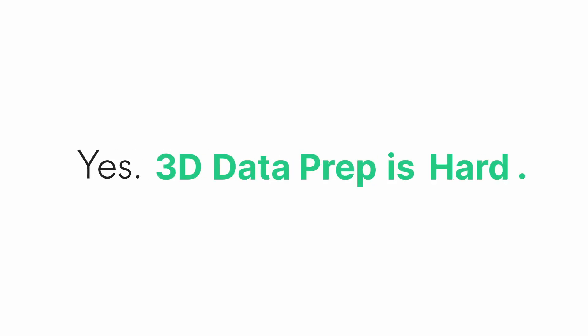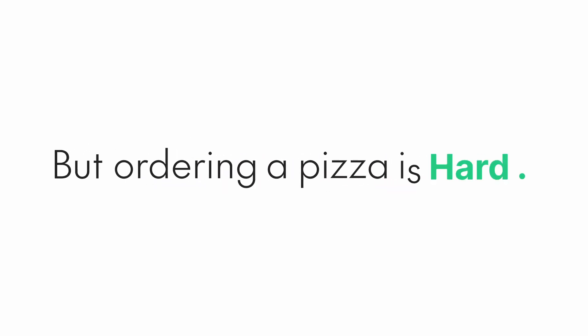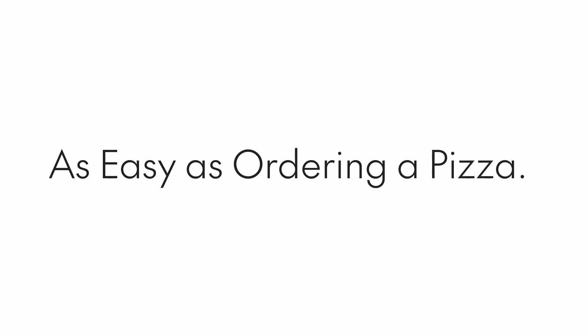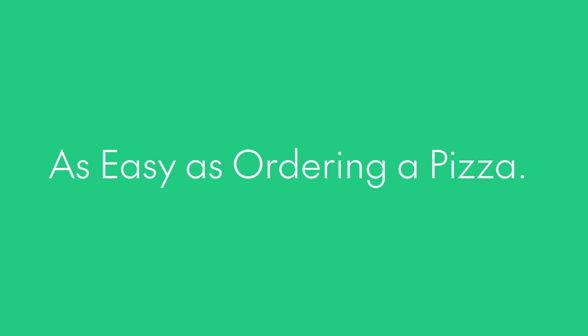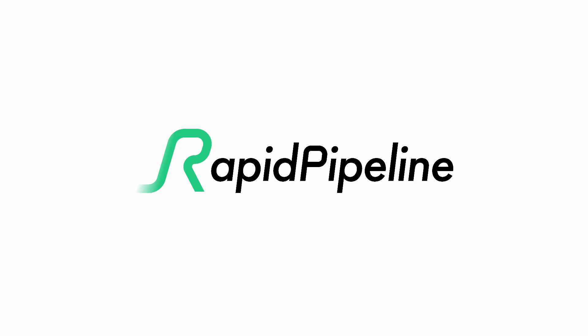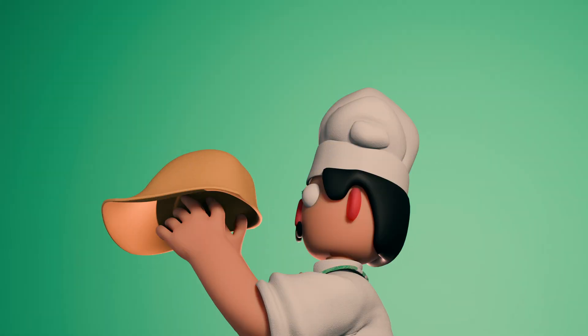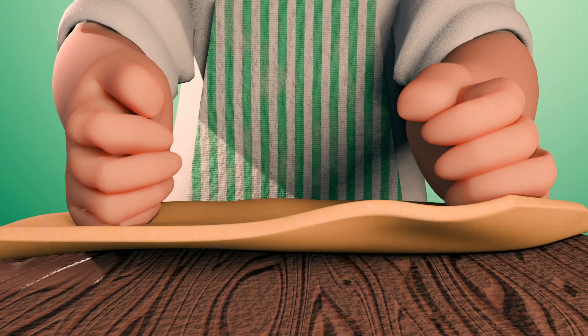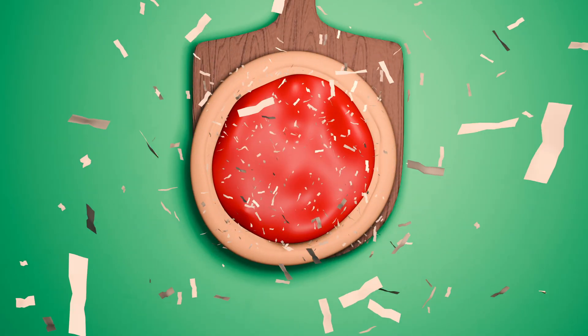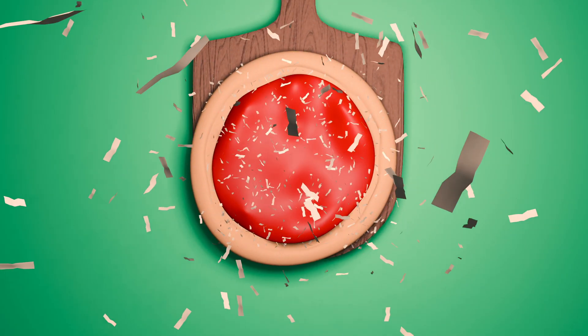3D data prep is hard, but ordering a pizza is easy — and we've made it as easy as ordering a pizza. Say hello to RapidPipeline. When you order a pizza, you can directly choose a standard one: a margarita or prosciutto. With RapidPipeline, it's just the same.